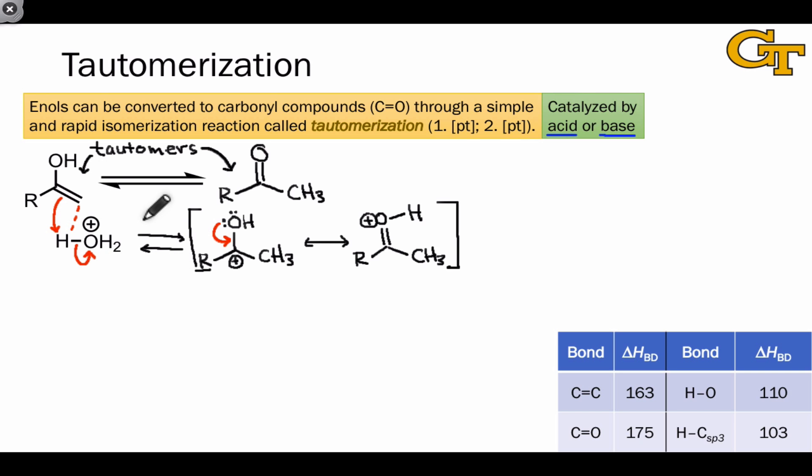We generated water during the first proton transfer step, and water can be used as a base in a second proton transfer step to remove hydrogen from the oxygen atom. This generates the ketone product and also regenerates the catalyst, H3O+. Both of these proton transfer steps are rapid and reversible, and so this overall process is an equilibrium.